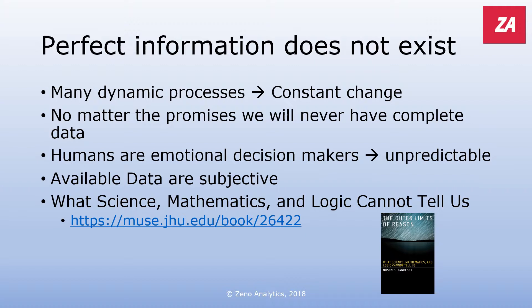All the data we use is also subjective — choices have been made about what data to store and how to store it. Data collected from the internet is subjective because we will never have all the opinions of all people. And there is a lot that science, mathematics, and logic cannot tell us — there are limitations both on a technical perspective and on a moral and philosophical perspective. Science and logic cannot tell us what is morally right. A good book on this for those interested is 'The Outer Limits of Reason,' depicted here.